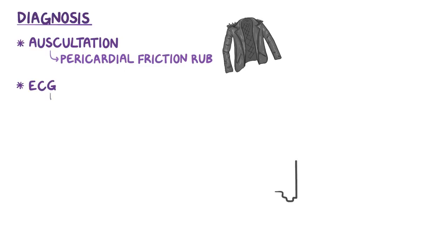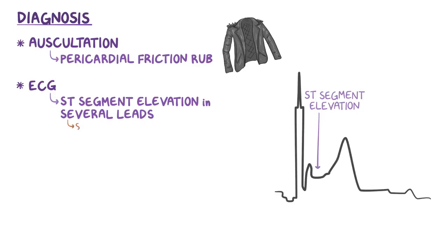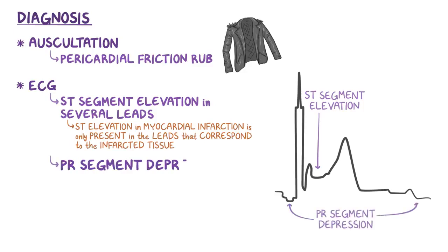On ECG, there's widespread ST segment elevations in several leads, which distinguishes it from the ST elevation in myocardial infarction, which is only present in the leads that correspond to the infarcted tissue. Also, a very specific ECG finding in pericarditis is PR segment depression.